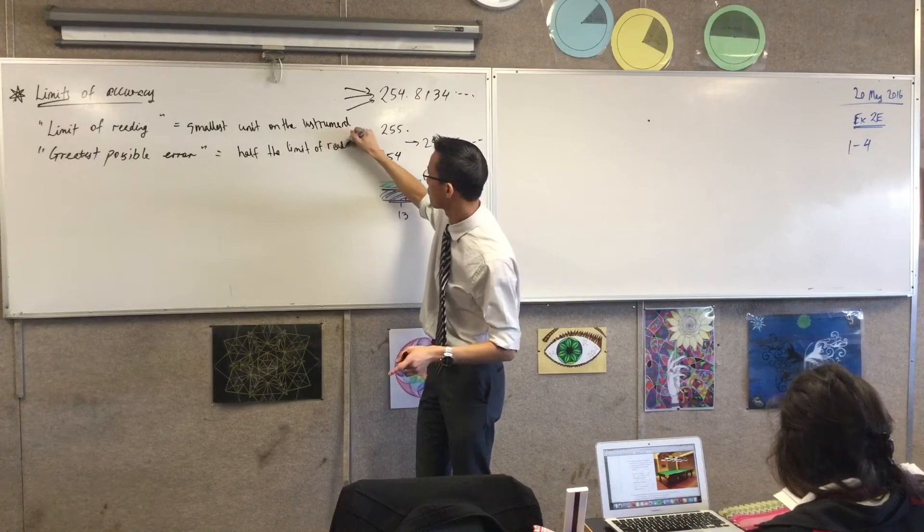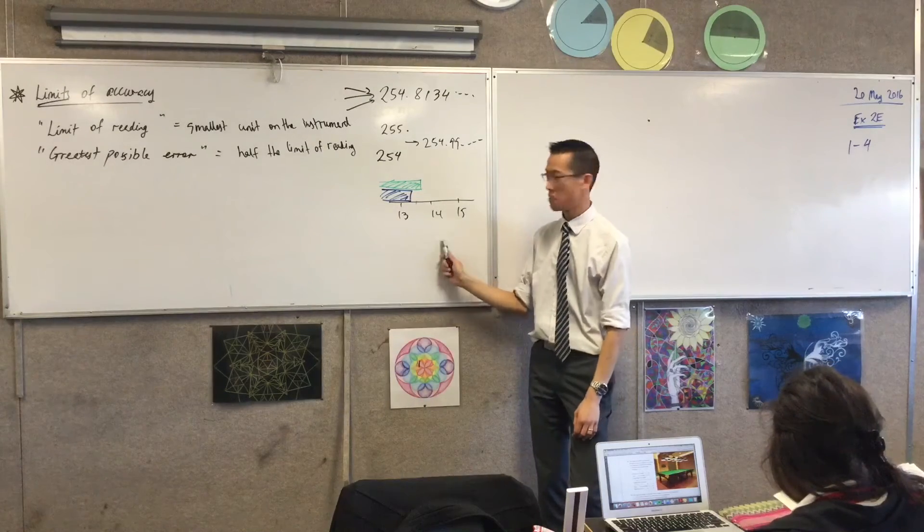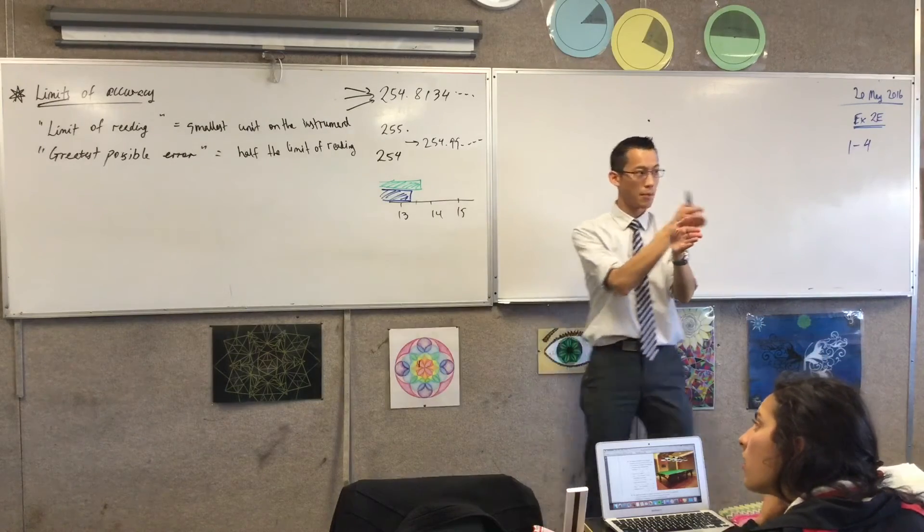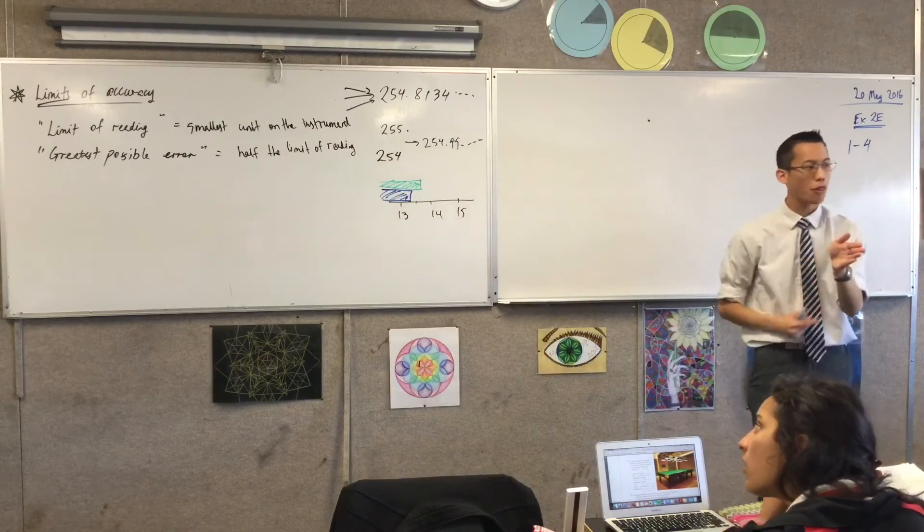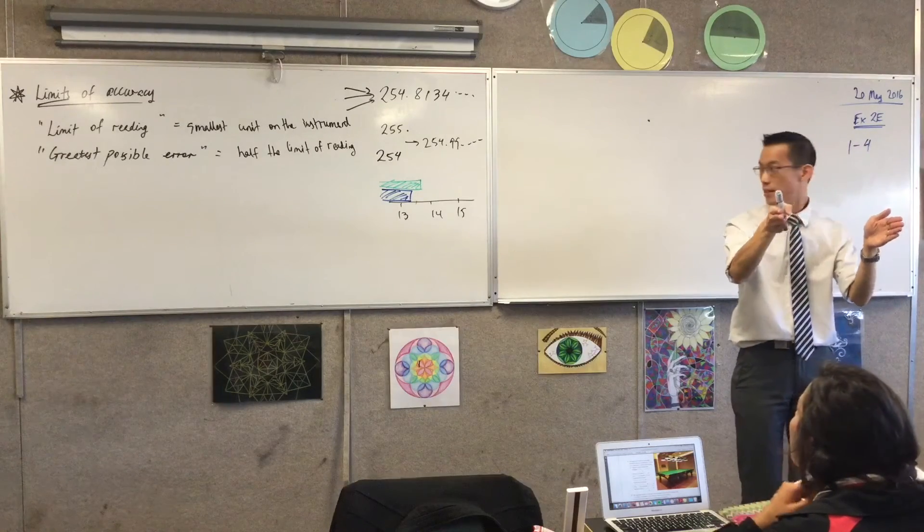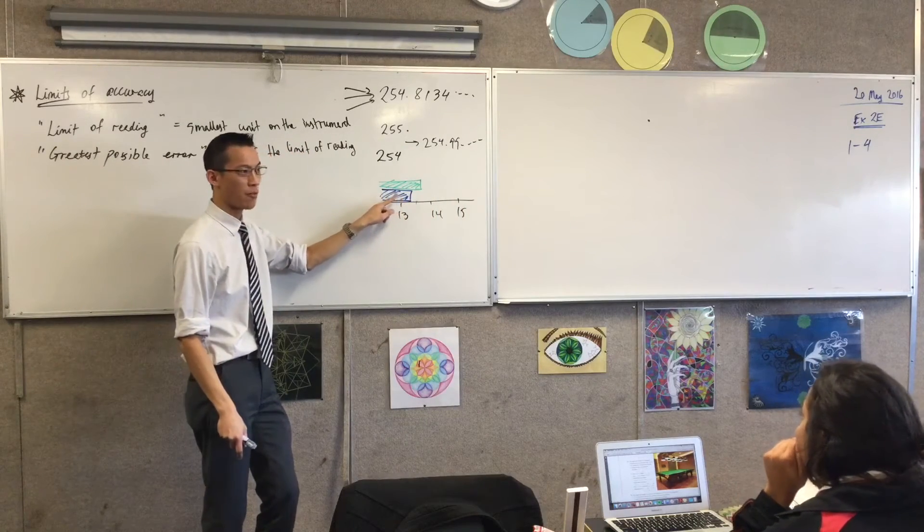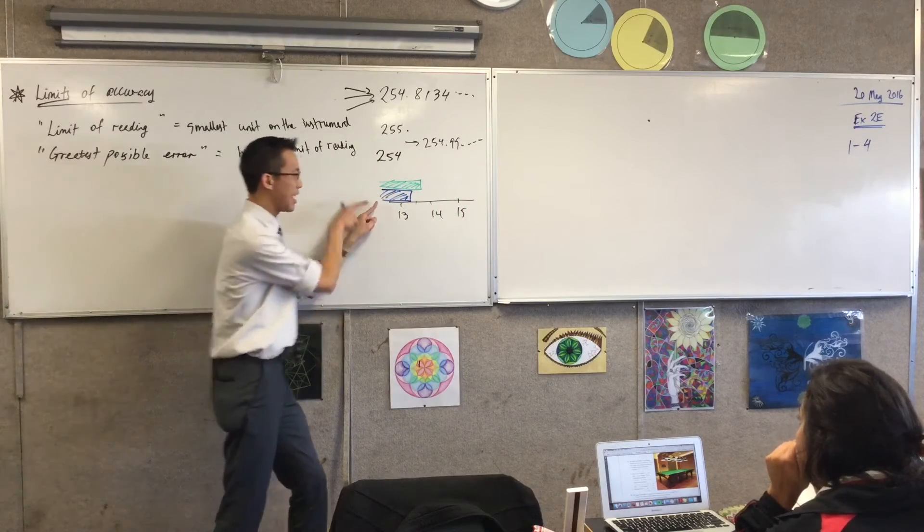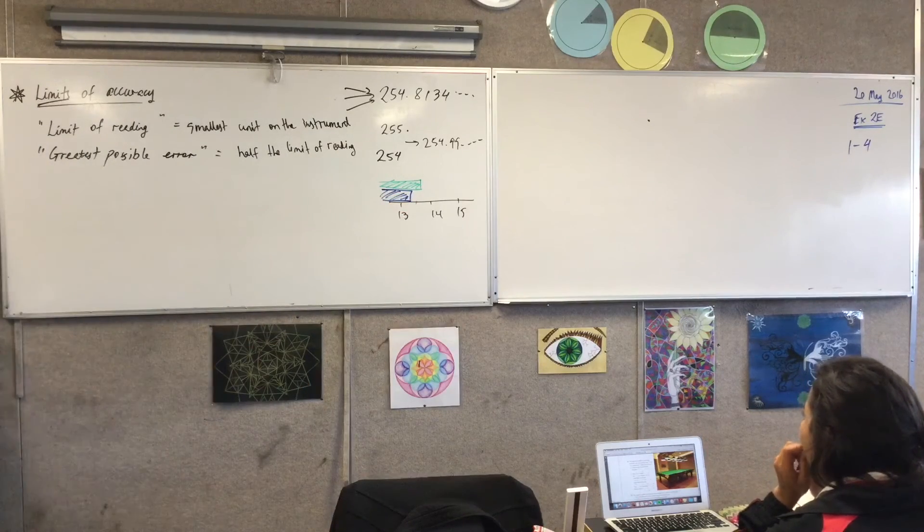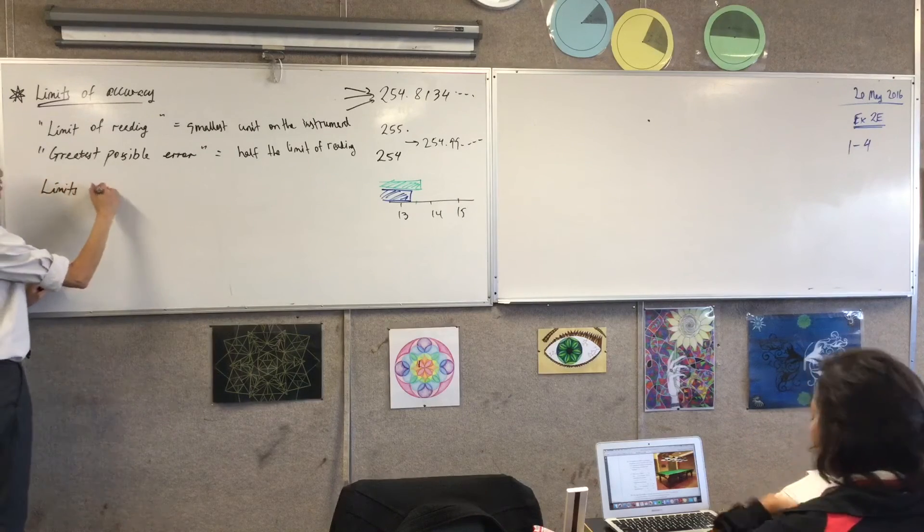So, the greatest possible error will be half the limit of reading. Now, we'll get to the plus or minus in a second, and we'll mention that. You've already done this. If I, therefore, say, okay, I measure with this thing, and I say 13 centimeters. It could be 13, or it could be 13.1, or 13.2, or 13.49, and I'd still say 13. I could go in the other direction. It could have been 12.9, or 12.8, or 12.51, and I'd still say it's closer to 13. So, what we then say are the limits,